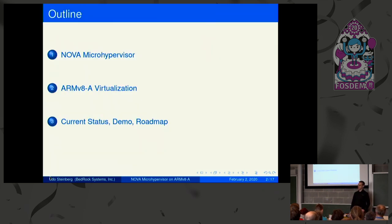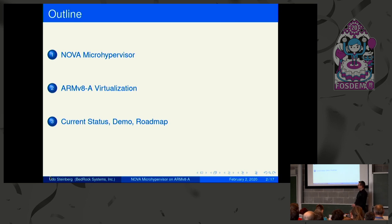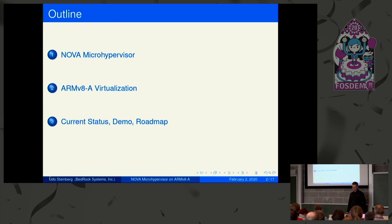Since only half of you know Nova very well, the first part of the talk will go into detail about what Nova is and where we came from. The second part will cover virtualization on ARMv8a — the A profile for performance cores, specifically Cortex-A. Then I'll conclude with the current status, a demo, and roadmap.